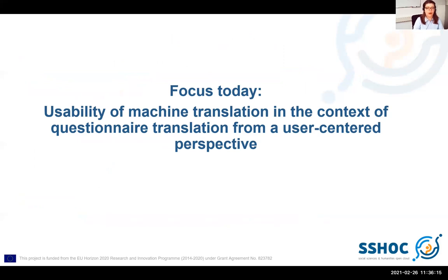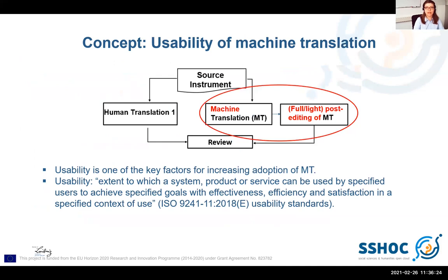Today I am focusing on the usability of machine translation in the context of questionnaire translation from a user-centered perspective. I am zooming into the translation step T of the TRAPD model to measure the usability of machine translation, since usability is one of the key factors for increasing the adoption of machine translation. My approach is a descriptive analysis and the goal is to present preliminary results for usability of machine translation.